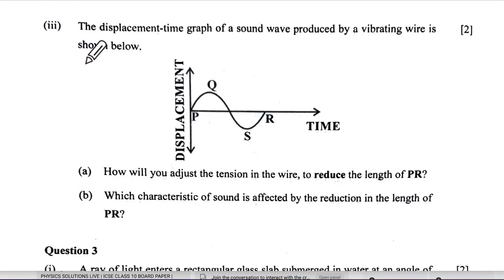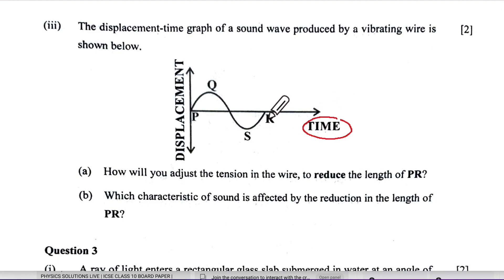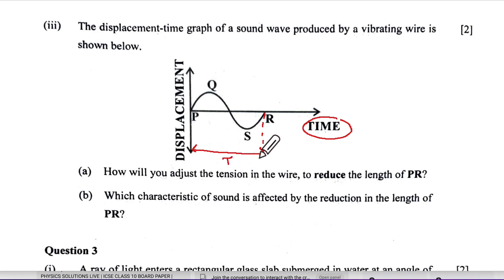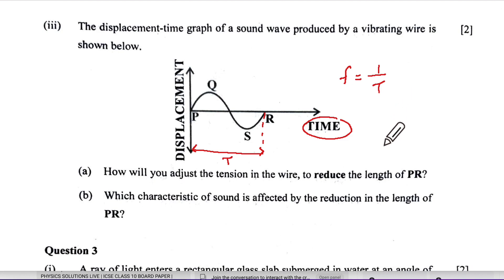Part three: the displacement-time graph of a sound wave produced by a vibrating wire is given. The x-axis is time, and the segment PR represents one full time period. Since frequency equals one divided by time period, this graph connects directly to frequency.